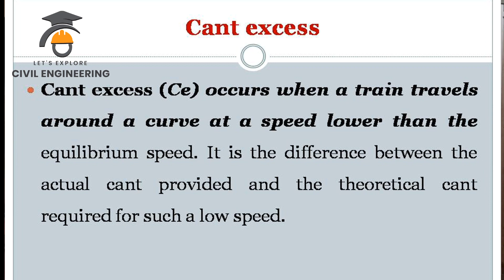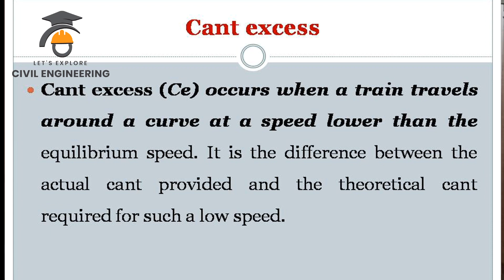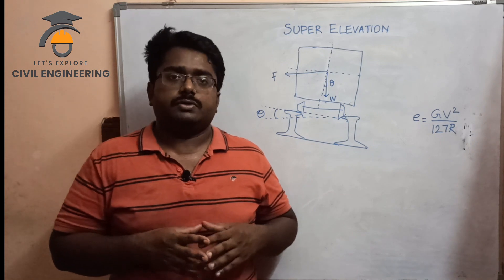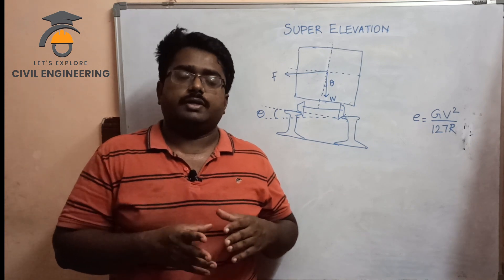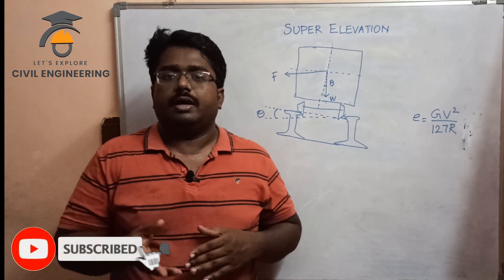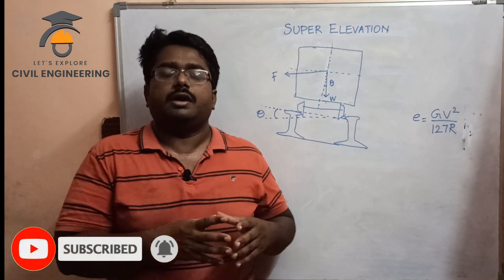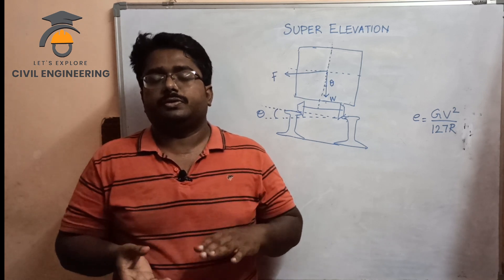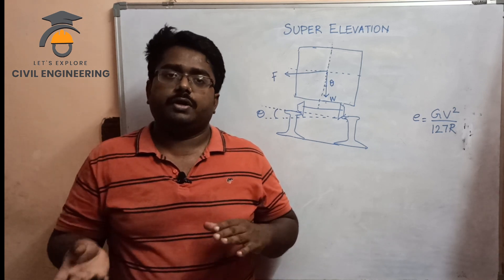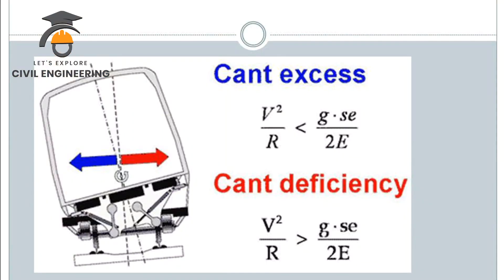When the train travels around the curve at a speed lower than the equilibrium speed, the terrain effect is high. We also have to consider the parallel speed. If the energy through the curve is low, we choose the gravity speed, and at the other level, we can see the effect of cant excess.